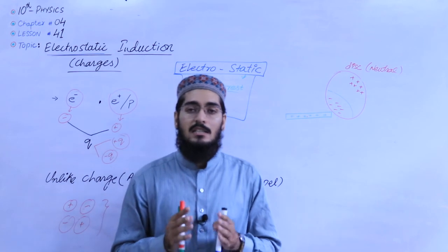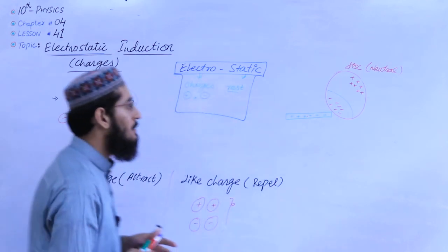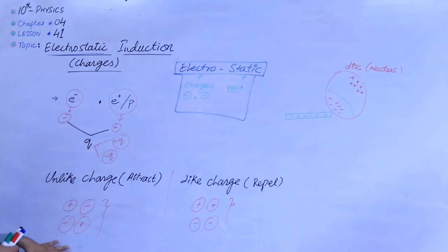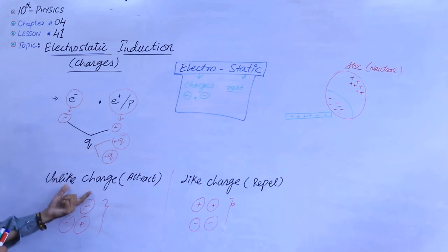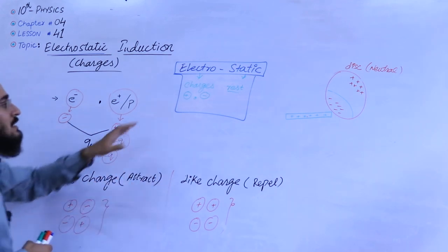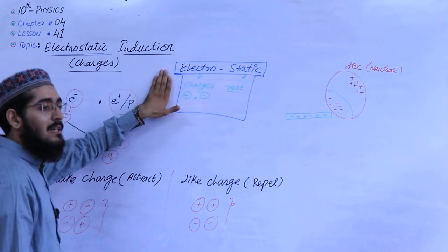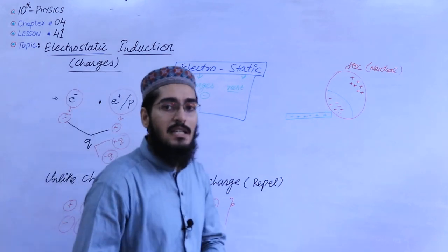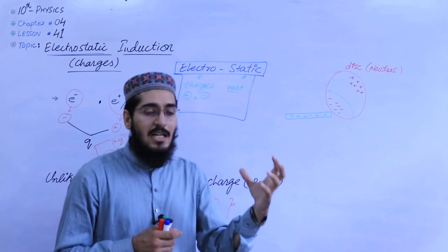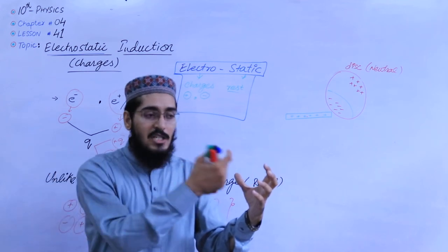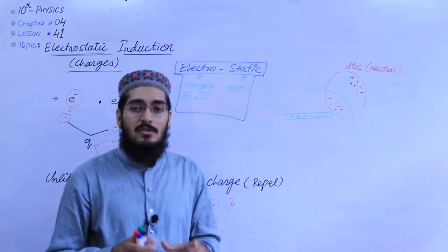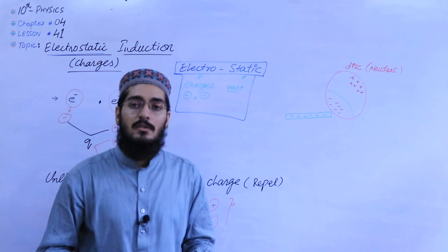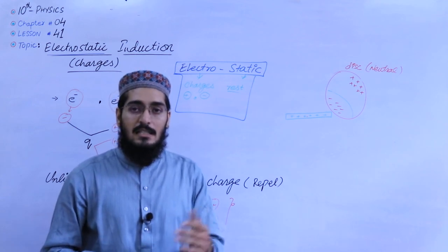Today's topic was simple. You need to remember three definitions. First, what is meant by charge — it is the basic particle of an atom. Second, the properties of charges. Third, the definition of electrostatics: the study of charges in a state of rest is called electrostatics. And the definition of electrostatic induction: when a charged object is brought near a neutral object and charges begin to appear on it, that is called electrostatic induction. In the next lesson, we will discuss the electroscope with a practical demonstration.